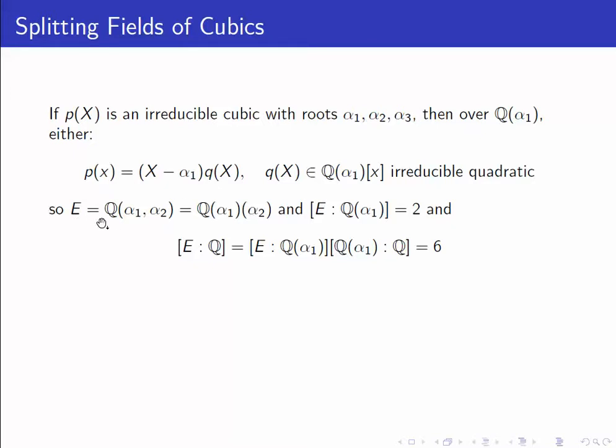In this case, the field generated by alpha 1 and alpha 2 is of degree 2 over Q alpha 1. And so by multiplicativity of degree, the degree of E over Q is 3 times 2, which is 6.